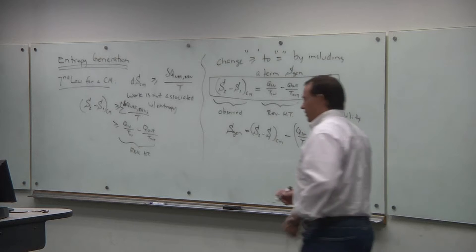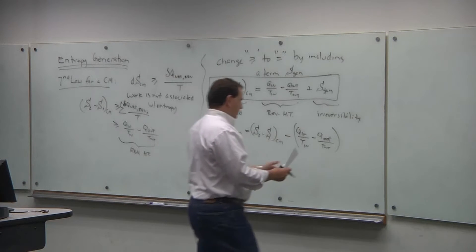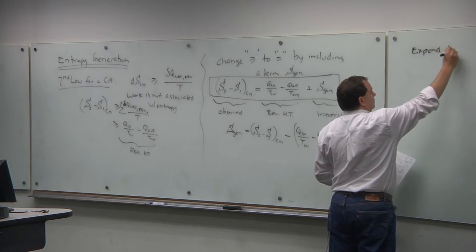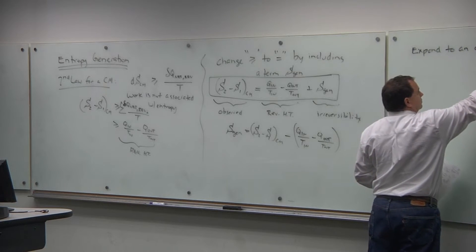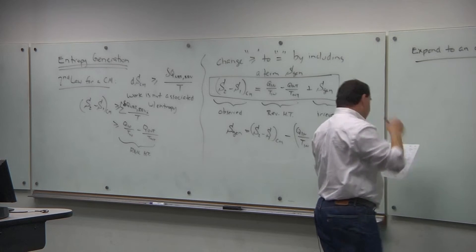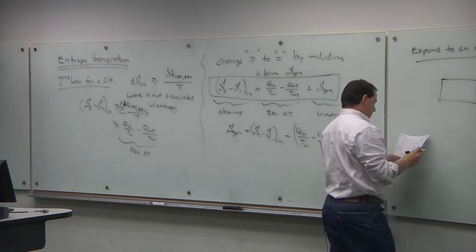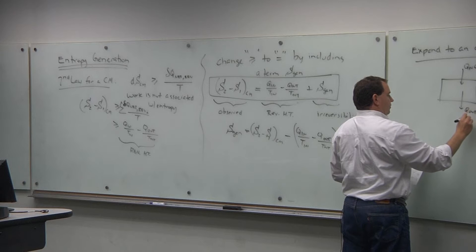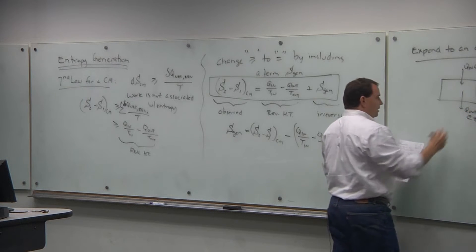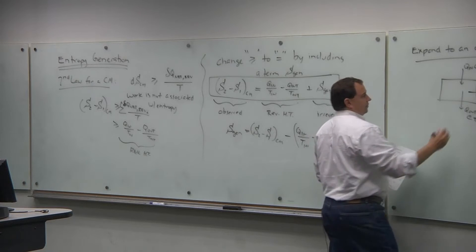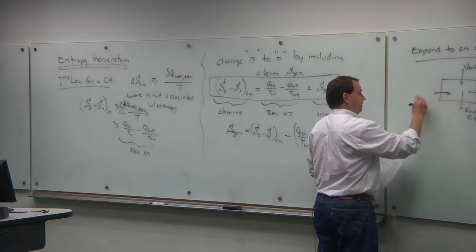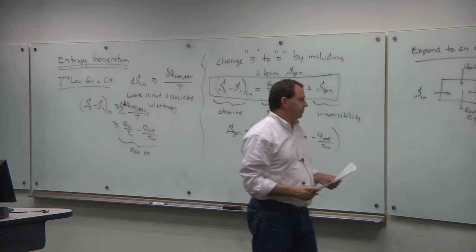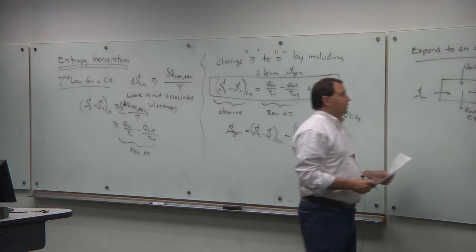The second law for a control mass is the starting point; now let's expand that to an open system. We have some system with Q_in at T_in, Q_out at T_out, some mass flow in carrying entropy S_in, and some mass flow out carrying entropy S_out. So we have an open system.